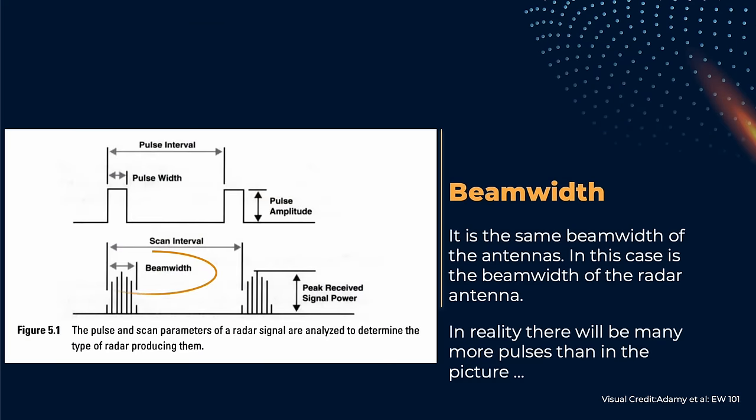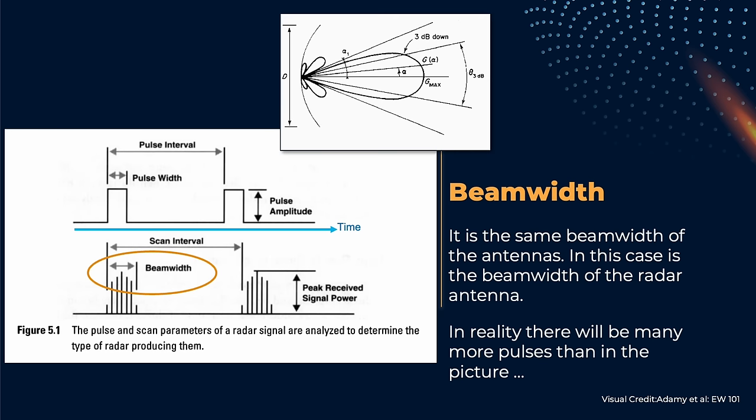Now, let's suppose that the radar is just scanning. While the antenna is moving, we will receive a group of pulses whose amplitude is determined by the antenna beam width, which then can be measured and calculated in this way.